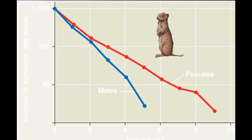When we graph a life table, we get what's called a survivorship curve — a graphic way of representing the data in a life table. The survivorship curve for Belding's ground squirrels shows a relatively constant death rate. You can see that males don't live as long as females, which is the case in most populations.